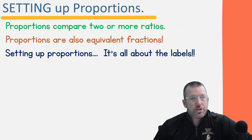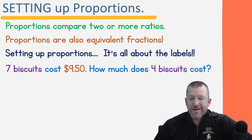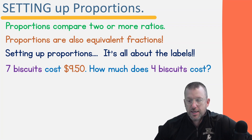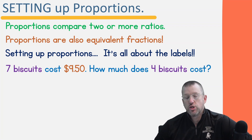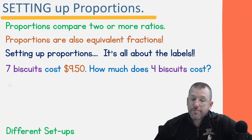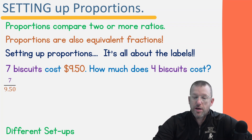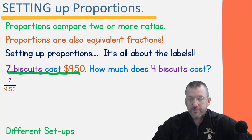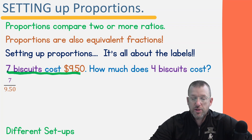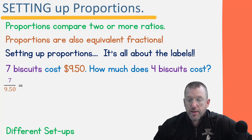Setting up proportions — it's all about the labels. Let's look at this one: seven biscuits cost $9.50. How much does four biscuits cost? We're not going to solve it yet, just set it up with a focus on labels, because there are about four different ways to set this up. We know there are seven biscuits and they cost $9.50, so we put that into our initial ratio.